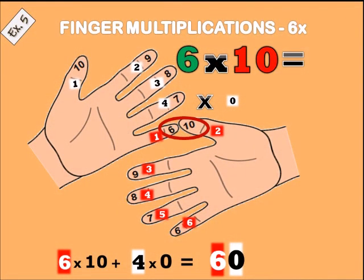Example five: six times ten. Put the little finger and the thumb together and count down — one, two, three, four, five, six — so six times ten is sixty. On the left hand we have four and nothing on the right hand, so four times zero is zero.